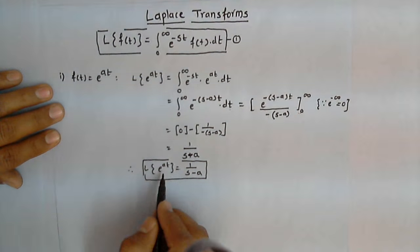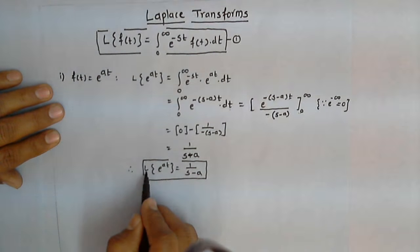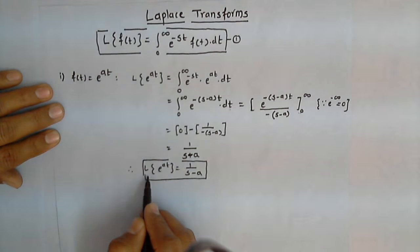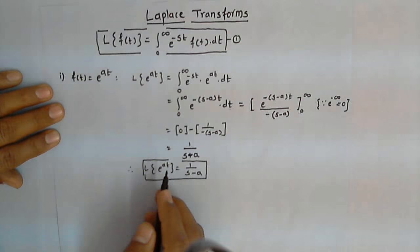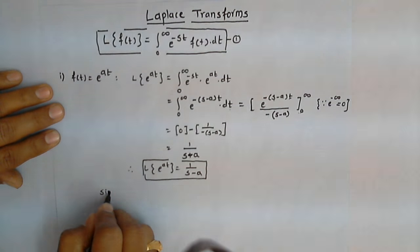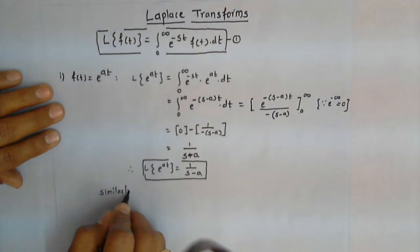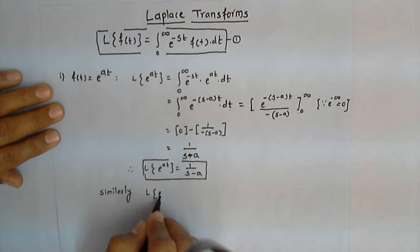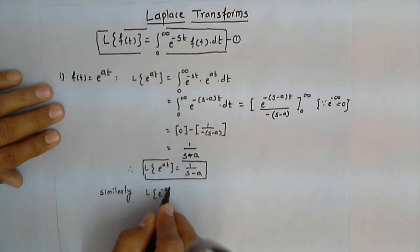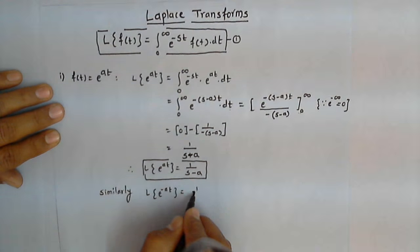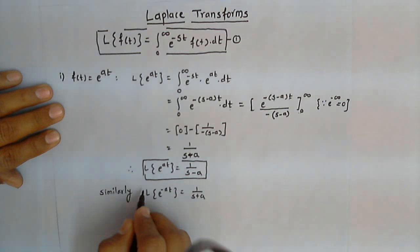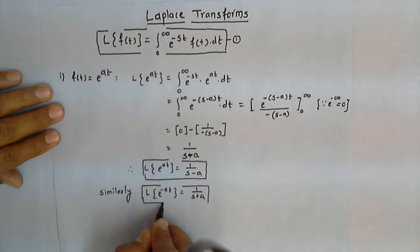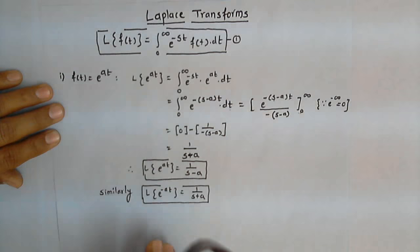In this way, the function of t is converted into a function of s using the Laplace transform. Similarly, if we replace a by minus a, we can prove that the Laplace transform of e raised to minus a t is 1 upon (s plus a).